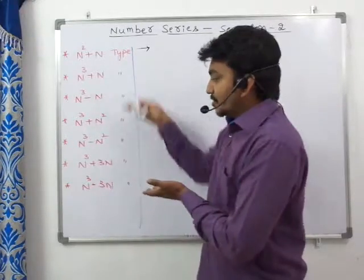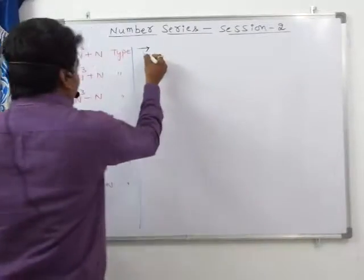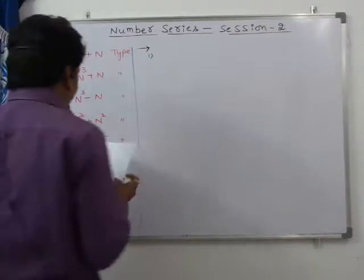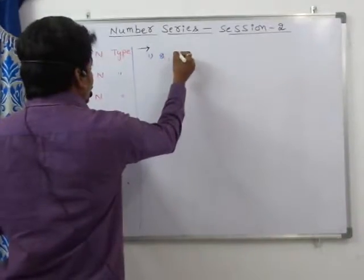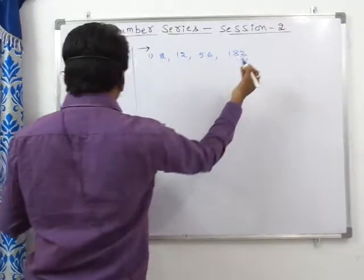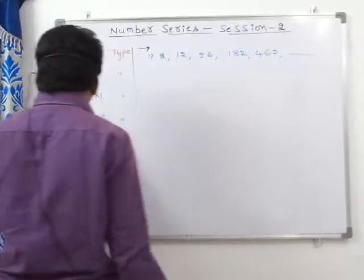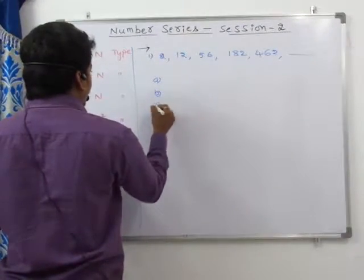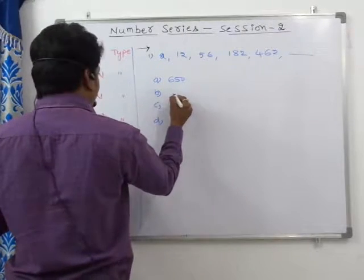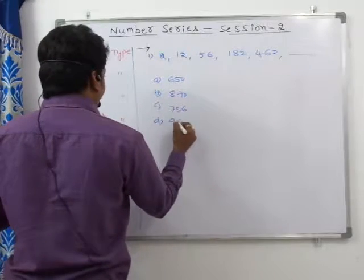I will explain all these kinds of questions by examples. Question number 1: the series is 2, 12, 56, 182, 462 — what is the missing number? The options are 650, 870, 756, and 992.